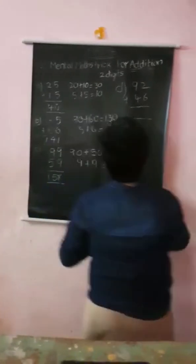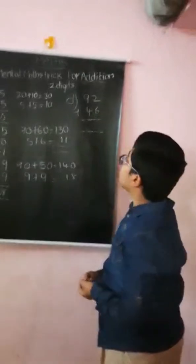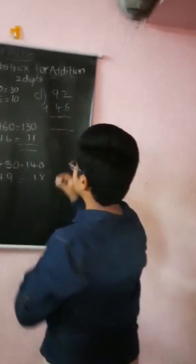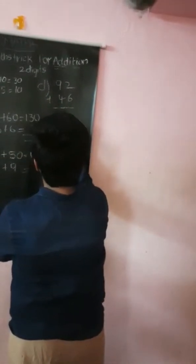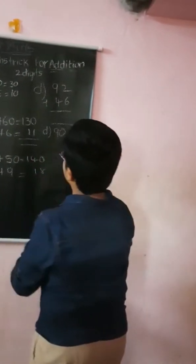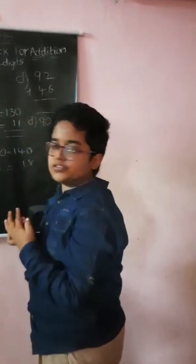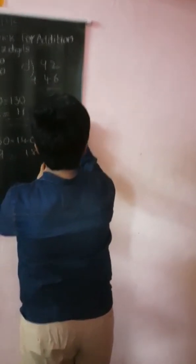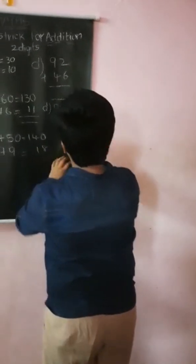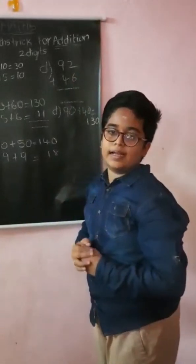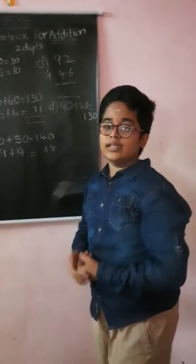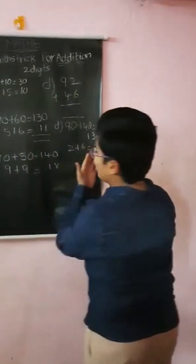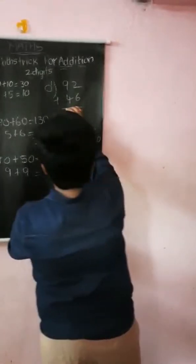Next, fourth problem: 92 plus 46. In the tens place, the number is 9, so 90. Downwards the number is 4, so 40. 90 plus 40 is 130. Again in the ones place, the number is 2 and downwards the number is 6. You know that 2 plus 6 is 8. The answer is 130 plus 8 is 138.